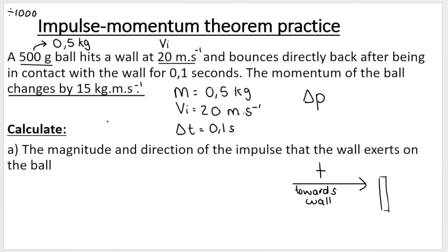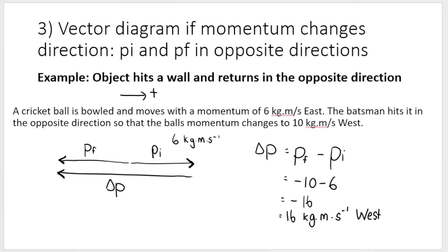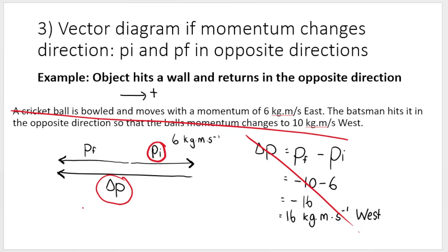Keep in mind that the ball is changing direction, so my final velocity will be in the opposite direction — the negative direction. Because there's a change in direction of the velocity, there's a change in direction of the momentum. The final momentum will be in the opposite direction to the initial momentum, and because of this, the change in momentum will be a negative change. The initial velocity is towards the wall; the final velocity and therefore the final momentum will be away from the wall, and therefore the change in momentum is also in the negative direction.